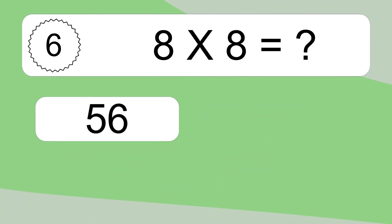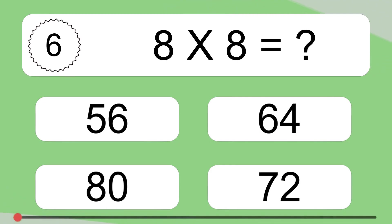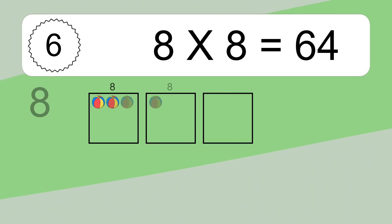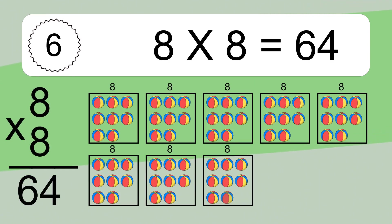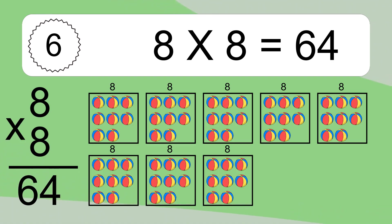Eight times eight equals what? Eight times eight equals 64. We have eight boxes, and each box has eight colorful balls inside. If you count all the balls in all the boxes together, you will have eight times eight balls. This equals 64 balls.